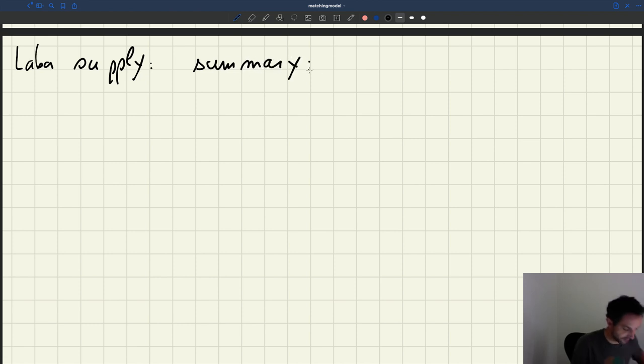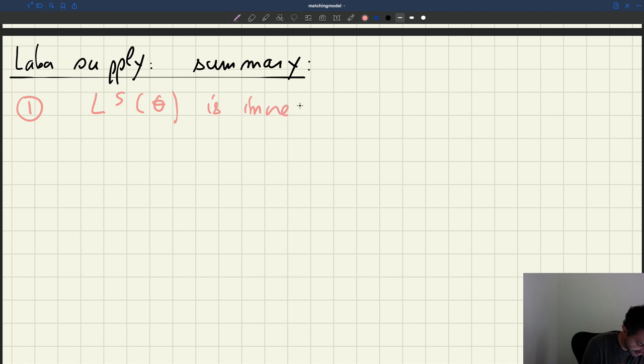So what are the key properties? First, we saw that the labor supply is increasing in theta.